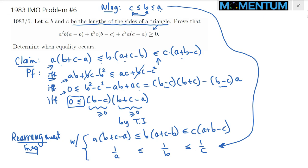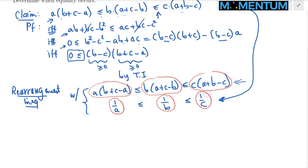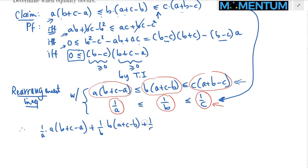Now we apply the rearrangement inequality. If you have two sequences ordered as we have, multiplying the smallest terms together and summing gives the maximum. So we get: (1/A)·A(B+C−A) + (1/B)·B(A+C−B) + (1/C)·C(A+B−C) ≥ a permutation such as (1/C)·A(B+C−A) + (1/A)·B(A+C−B) + (1/B)·C(A+B−C).